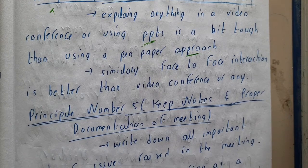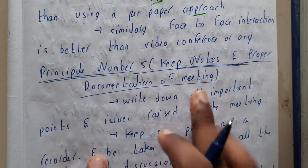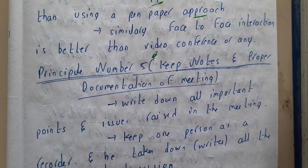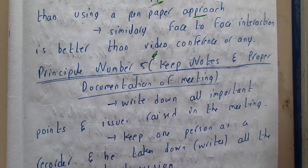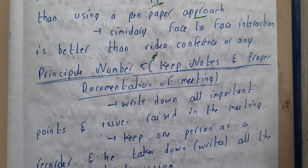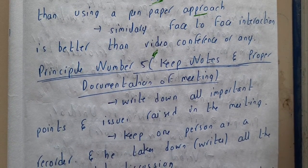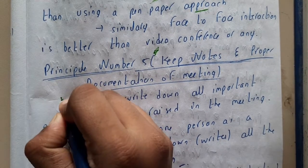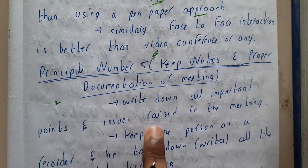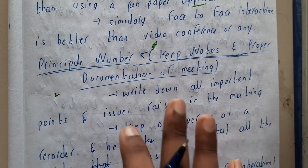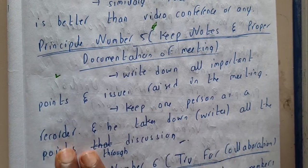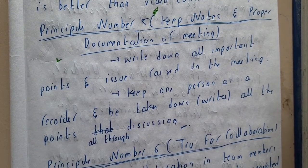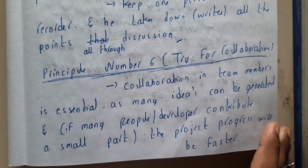Principle five is to keep notes and prepare documentation of the meeting. Whenever there is a meeting, please record it or take an audio note. If your company is large enough, appoint someone whose sole job is to gather and note down everything the client says. Write down all important points and issues raised in the meeting. Keep one person as a recorder who writes all points throughout the discussion.